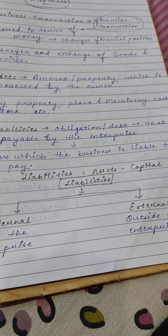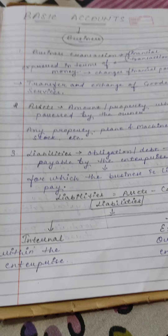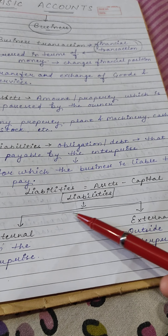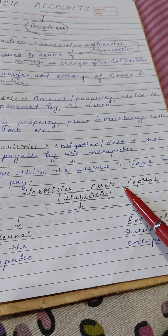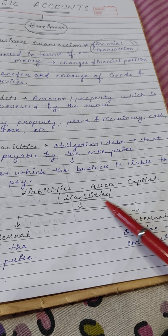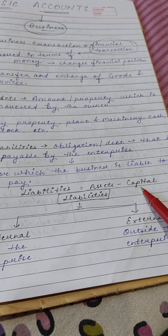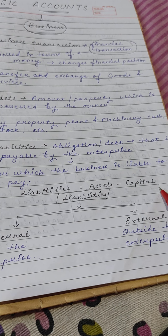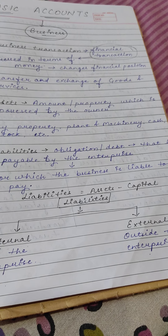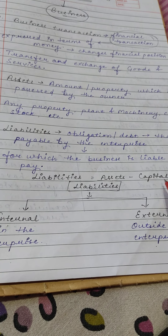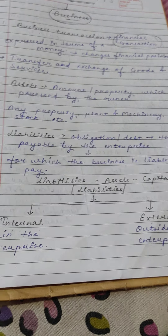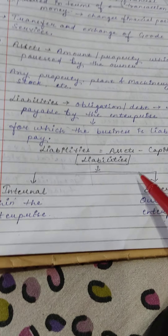The formula for liabilities is: Liabilities = Assets minus Capital. When we subtract the capital from total assets, we get our liabilities. What capital is, you will learn in the next few terms.